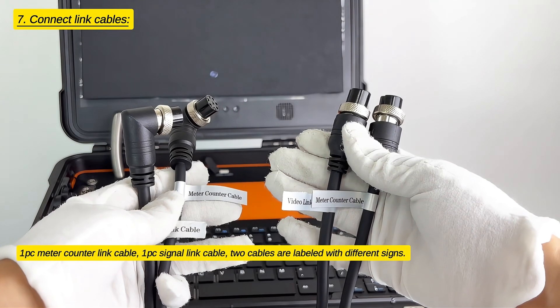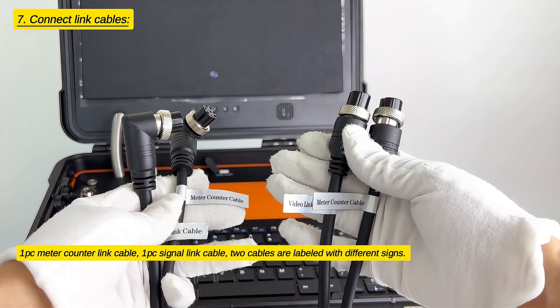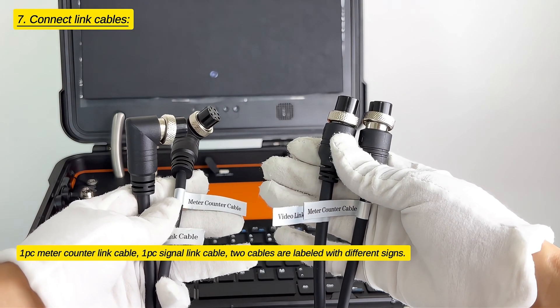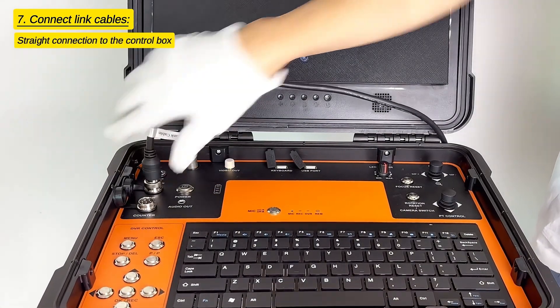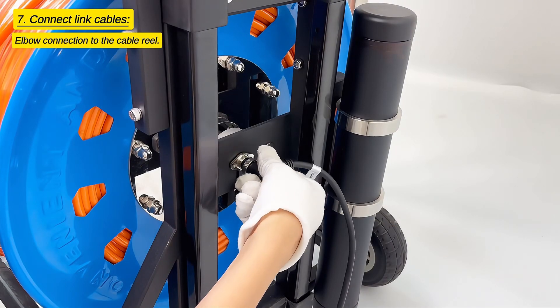One meter counter link cable, one signal link cable. Two cables are labeled with different signs. Straight connection to the control box, elbow connection to the cable reel.